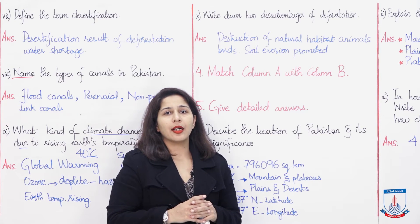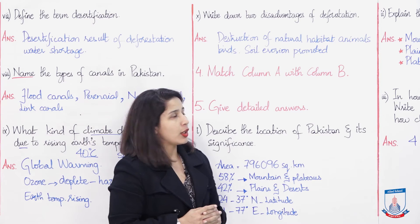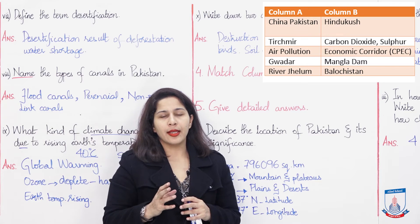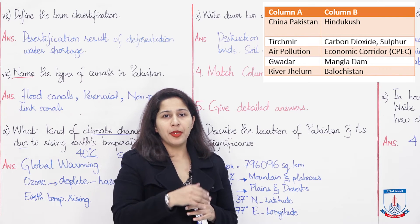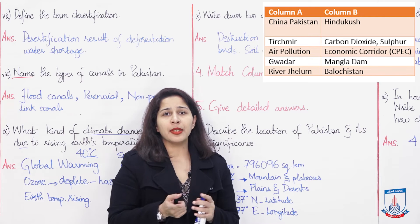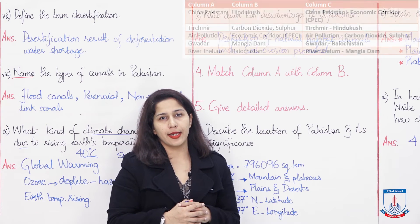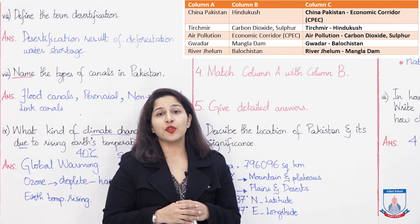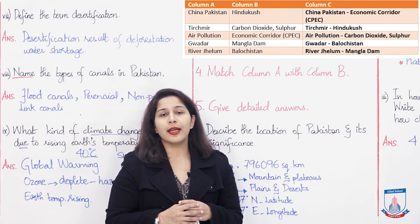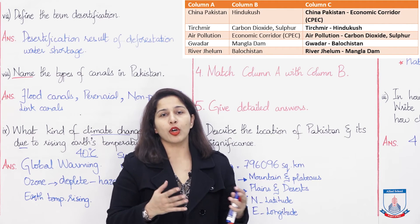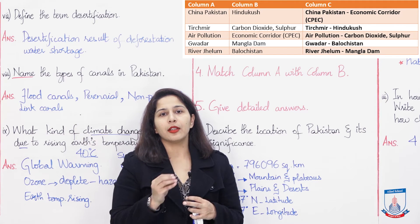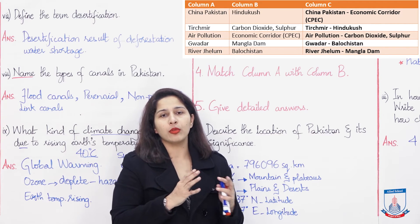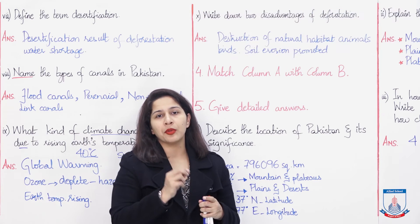Now what you're seeing on your screen is question number 4: Match Column A with Column B. Column A has options like China-Pakistan, Tershmir, air pollution, Gwadar, and river Jhelum. Column B has other options. In Column C we write the answers together. China-Pakistan relates to CPEC economic corridor. Tershmir is in Hindukush. Air pollution involves carbon dioxide and sulfur as pollutants. Gwadar belongs to Balochistan. River Jhelum is related to Mangla Dam.